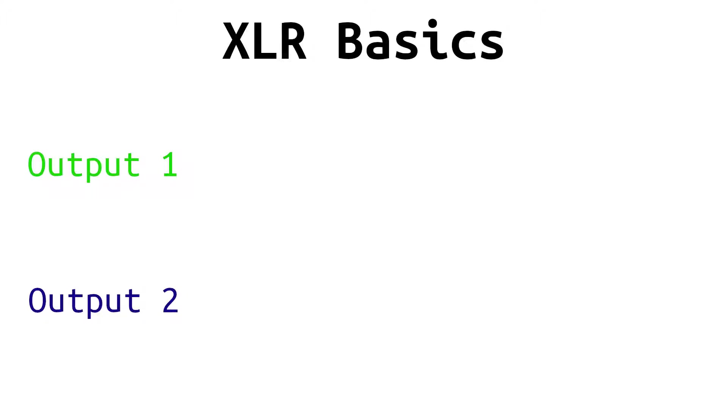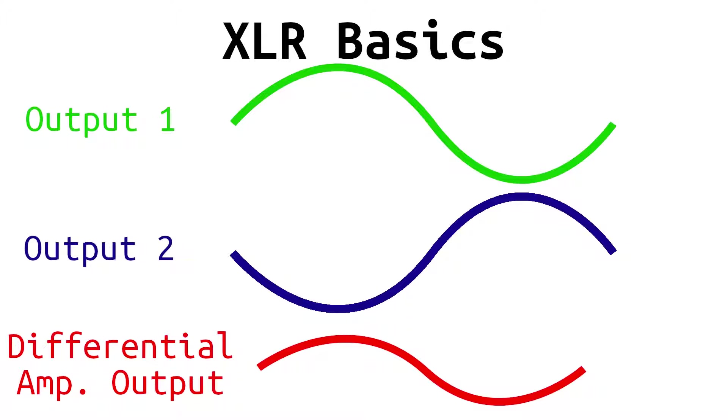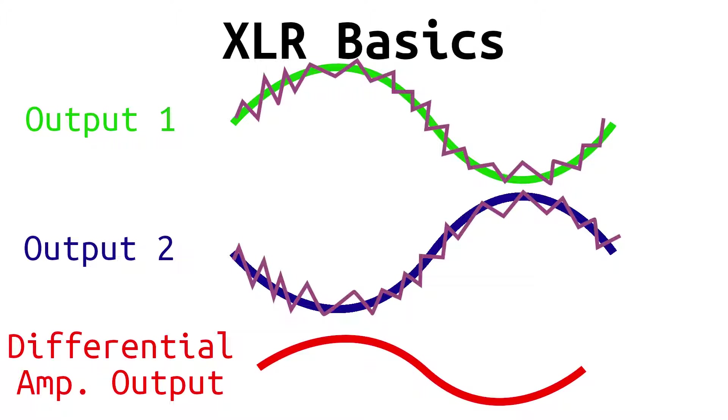Basically, XLR uses two outputs in order to reduce noise. The outputs are identical to each other, except that one of them is the exact opposite of the other. Then, when the two signals reach the audio interface, they are both put into a differential amplifier. This will remove the difference between the two and restore the original audio signal. Why is this important? Well, let's imagine that there's a significant amount of noise on the line from interference in the air. This interference will affect both outputs the exact same. Then, when the outputs reach the differential amplifier, the interference will cancel itself out, leaving only the original audio signal intact.